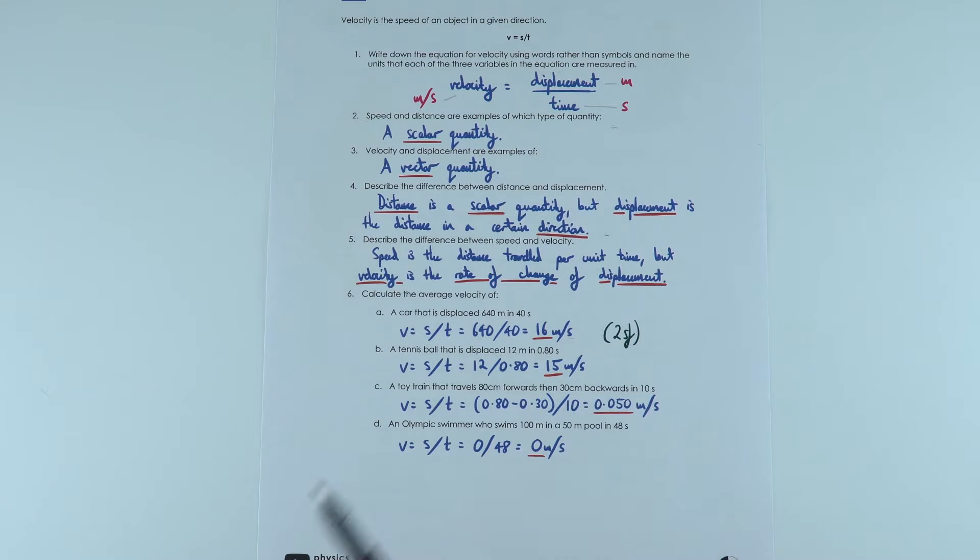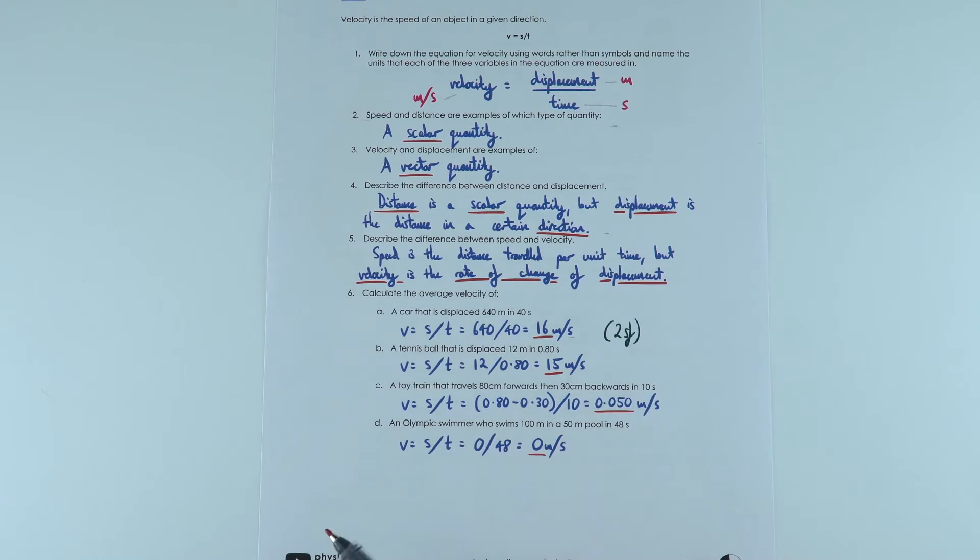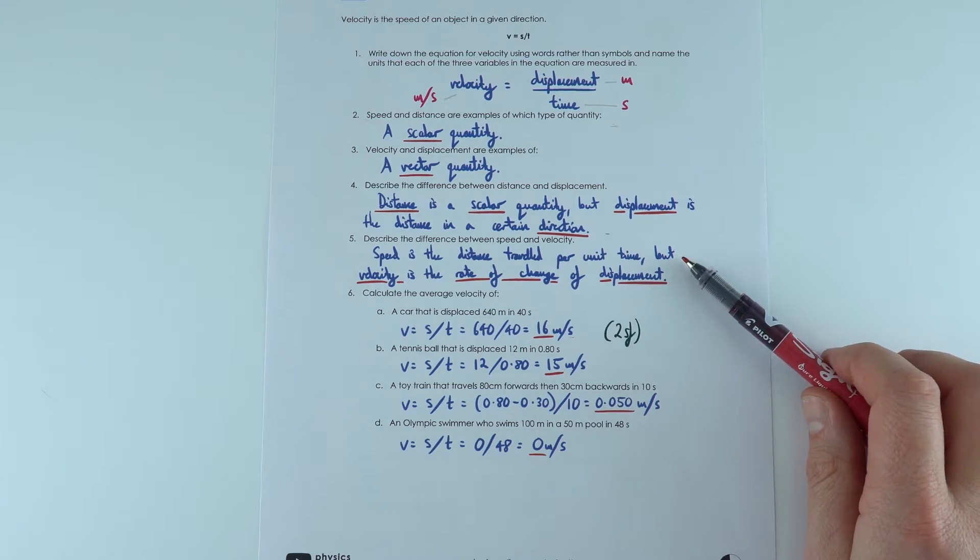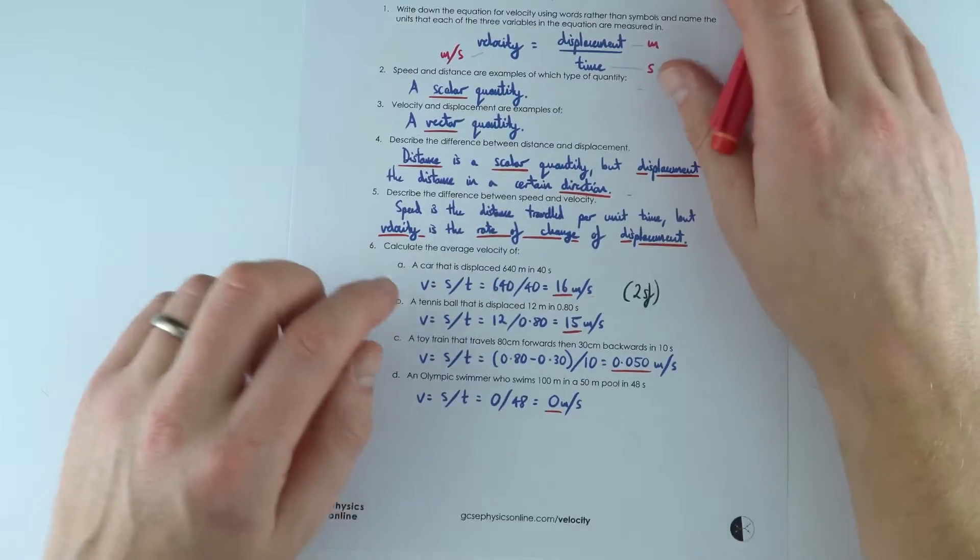And we can also say that speed is the distance traveled per unit time, but velocity is the rate of change of displacement. We can also say sometimes that velocity is speed in a given direction. So now we need to think about the direction.